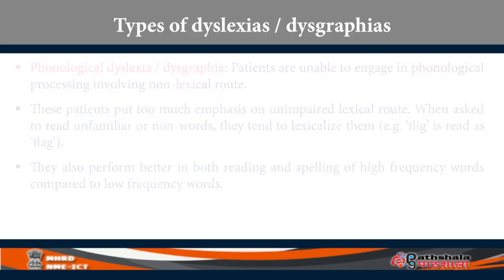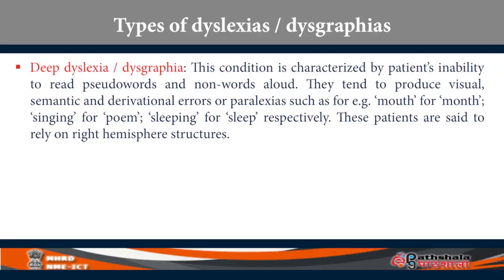There is another variety called deep dyslexia or dysgraphia, characterized by the patient's inability to read pseudo-words and non-words aloud. They tend to produce visual, semantic, and derivational errors — known as paralexias. For instance, they will read 'mouth' as 'month,' 'singing' for 'poem,' or 'sleeping' for 'sleep.' These patients are said to rely more on the right hemisphere, and since right hemisphere processing is holistic rather than analytic like the left hemisphere, some of these errors are attributed to that reliance.